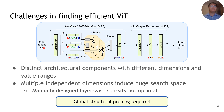Finding efficient ViT is challenging, as vision transformers contain distinct architectural components with different dimensions and value ranges. Moreover, multiple independent dimensions in the transformer block induce a huge search space, requiring global structural pruning to find optimal sparsity in each component.